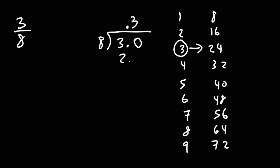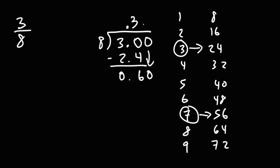8 times 3 is 24, so 8 times 0.3 is 2.4. 3.0 minus 2.4 is 0.6. Now 8 doesn't go into 6, so we need to bring down a 0. How many times does 8 go into 60? The highest multiple of 8 just under 60 is 56, so 8 goes into 60 7 times. 8 times 7 is 56, so 8 times 0.07 is 0.56. Now we subtract: 60 minus 56 is 4.